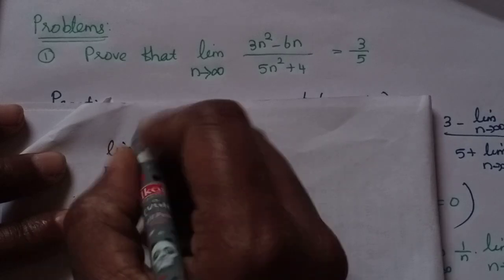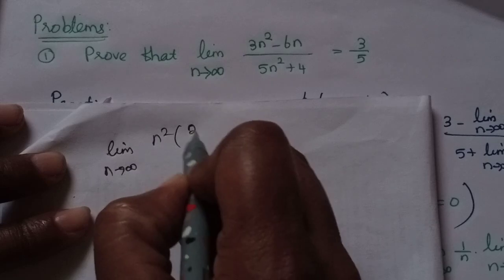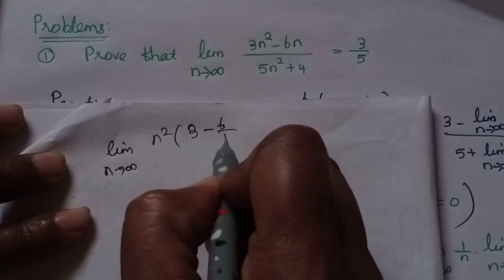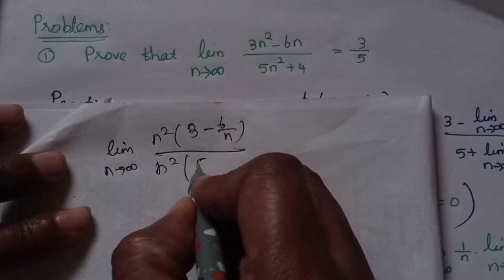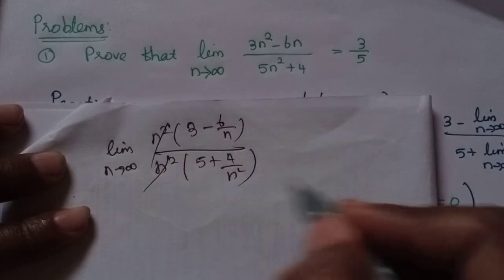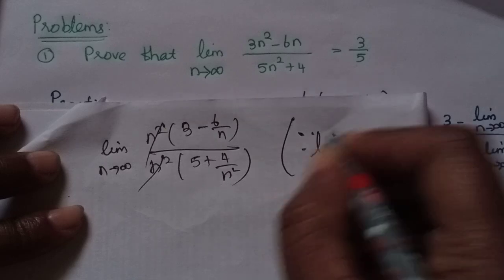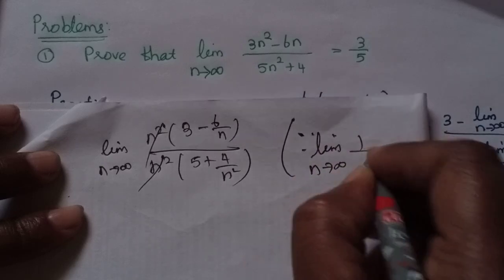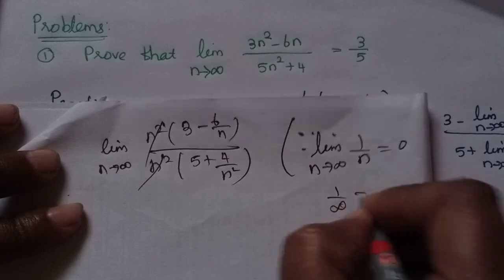Consider sn equal to (3n² minus 6n) divided by (5n² plus 4). Dividing numerator and denominator by n², we get (3 minus 6/n) divided by (5 plus 4/n²). We know the result: limit n tends to infinity of 1/n is 0.